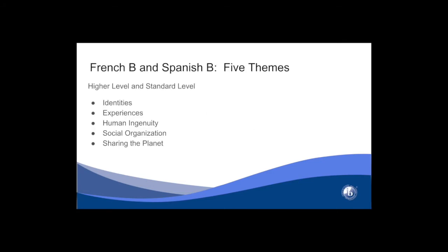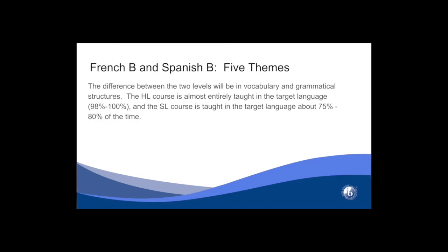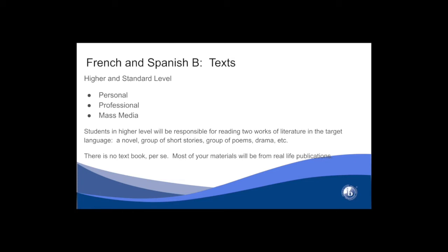You have two options if you've taken French or Spanish before: French B or Spanish B. Those courses are organized around five themes — identities, experiences, human ingenuity, social organization, and sharing the planet. Unlike your courses in 9th and 10th grade, you will use these themes to explore the grammatical structures and vocabulary of the language. The difference between SL and HL is in vocabulary and grammatical structure. The higher level course is taught almost entirely in the target language, about 98–100% of the time, and the SL course is taught in target language about 75–80% of the time. Both courses use different kinds of texts — personal, professional, and mass media. Students in higher level are also responsible for two works of literature in the target language, such as a novel, short stories, poems, or a drama.